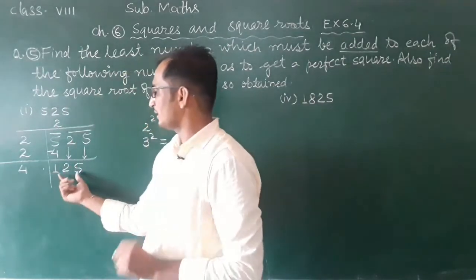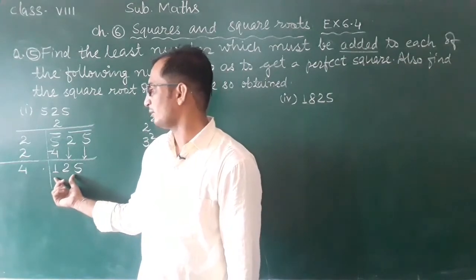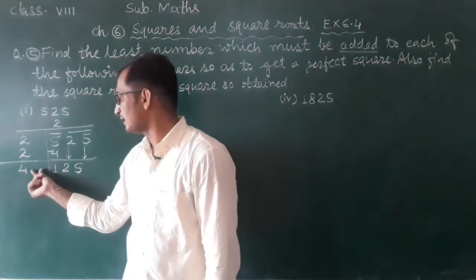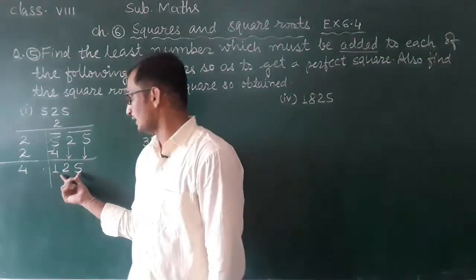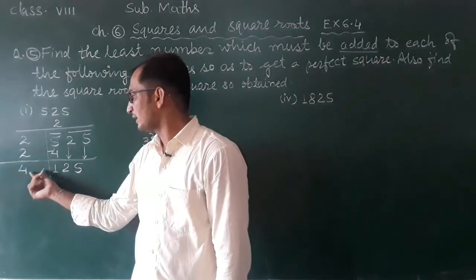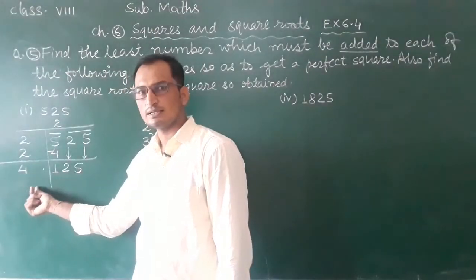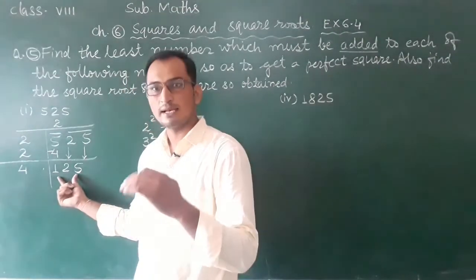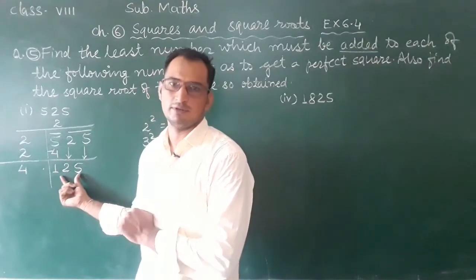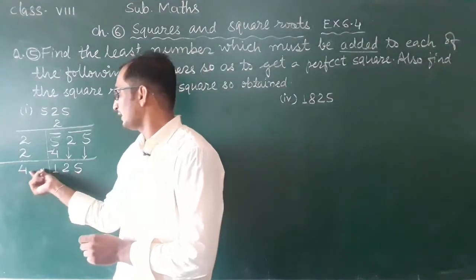Now we put the same number here and here, such that when we multiply, we get 125 exactly or less than 125. 43 is around 120, so let me try putting 3 here and the same number here.